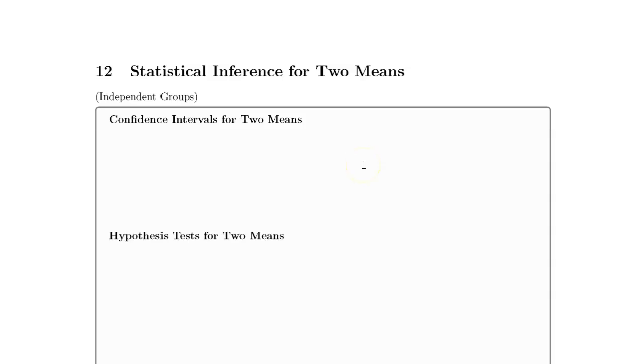We've had one proportion, two proportion, one mean, and now two means, so we're almost done with our Dr. Seuss book tour through statistical inference in STAT201.